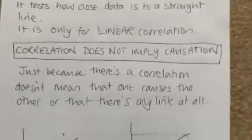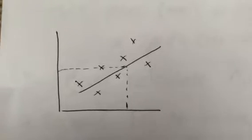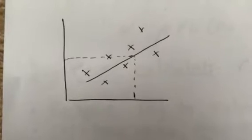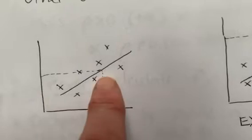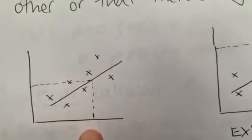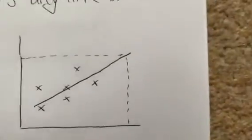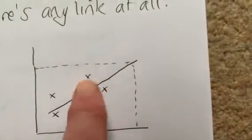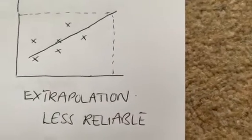It doesn't mean there definitely will be a link. Regarding scattergraphs: if you use a line of best fit to make a prediction, and your value lies well within the known range of values, your prediction will be more reliable. If you extend the line of best fit and make a prediction outside that range, we call that extrapolation, and the value is less reliable.